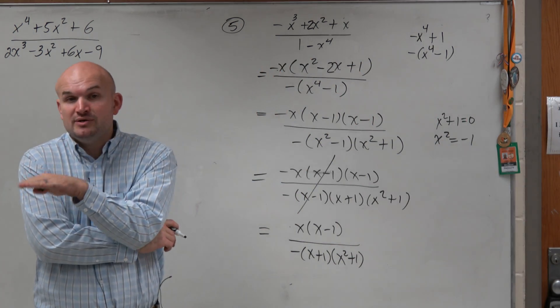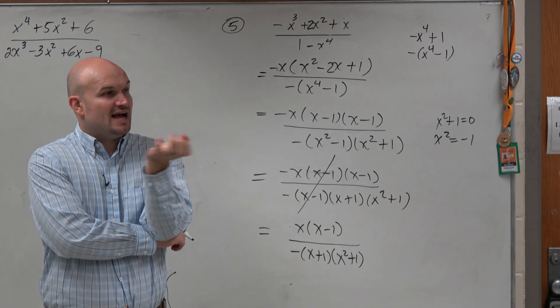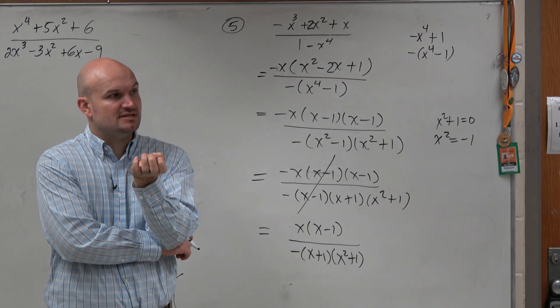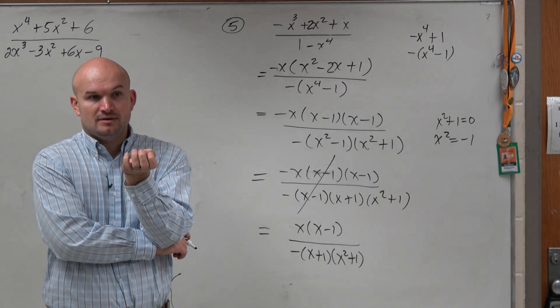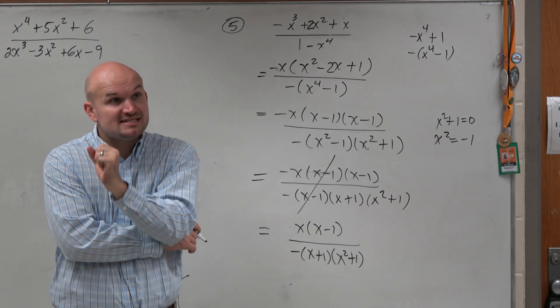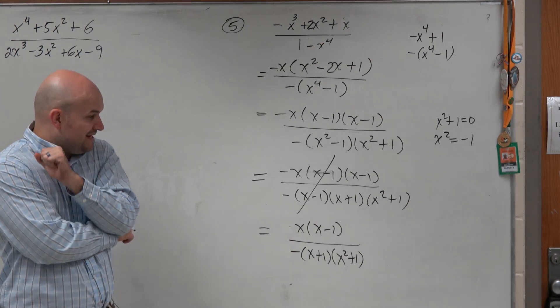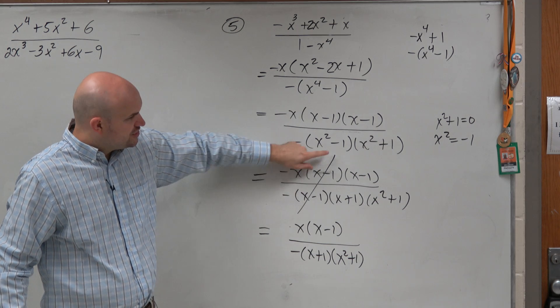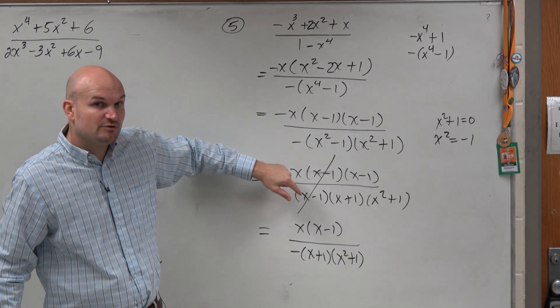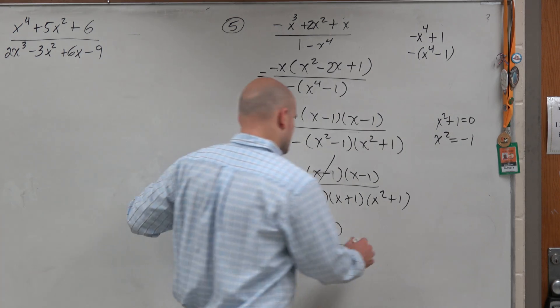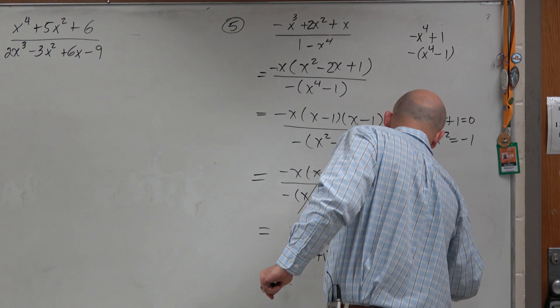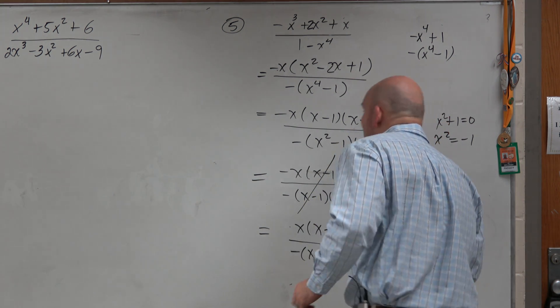Well, remember our unit on functions. If I have a hole or if I have an asymptote, are both those values not in my domain? Yes. So just because something gets simplified out doesn't mean it's not a restriction. What that means is just because you simplified out this x minus 1, that is still a restriction on your polynomial. So we would say x cannot equal 1, and x cannot equal negative 1.